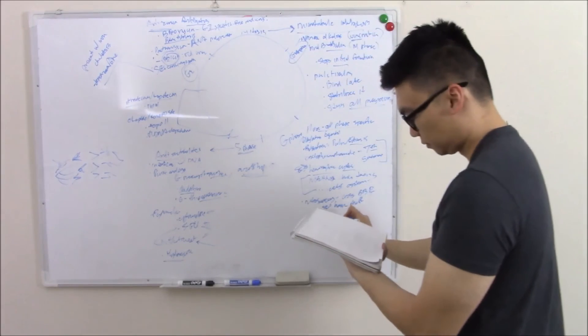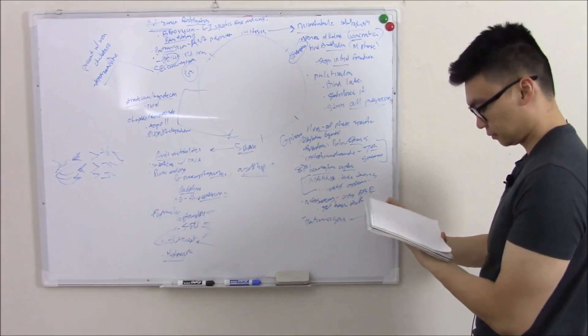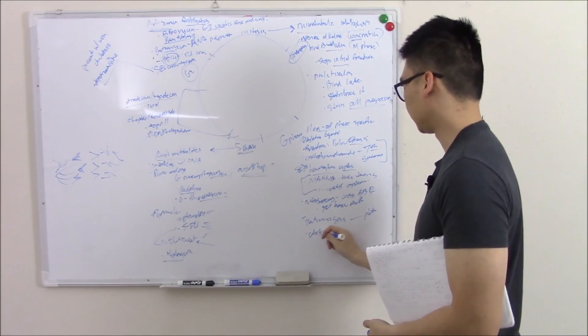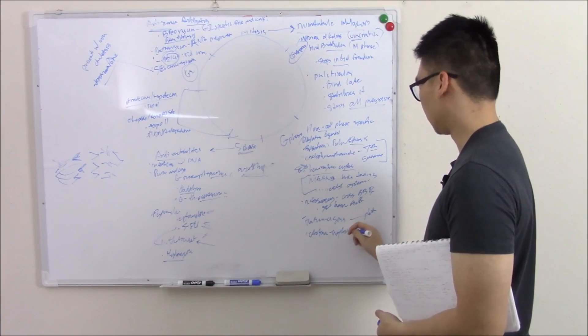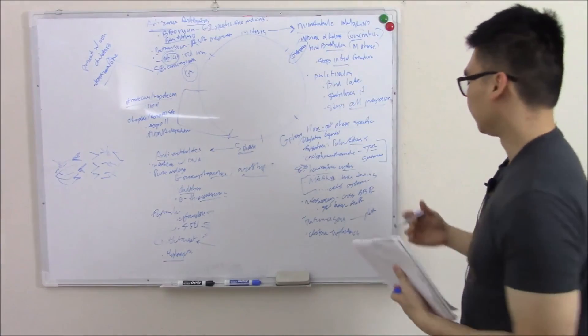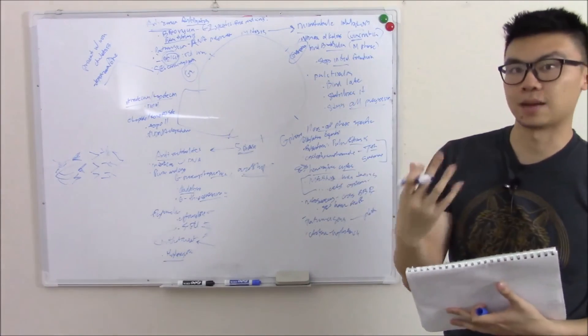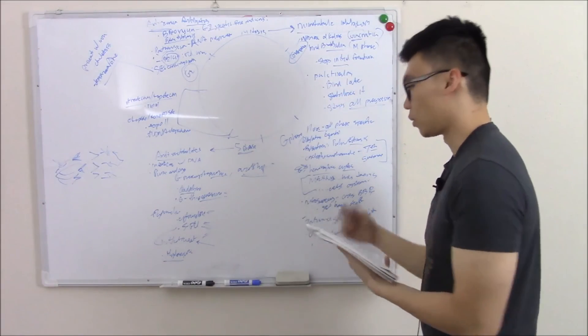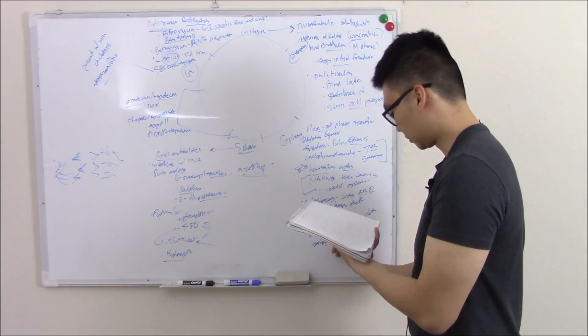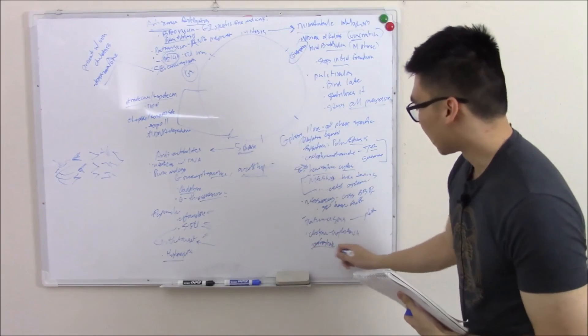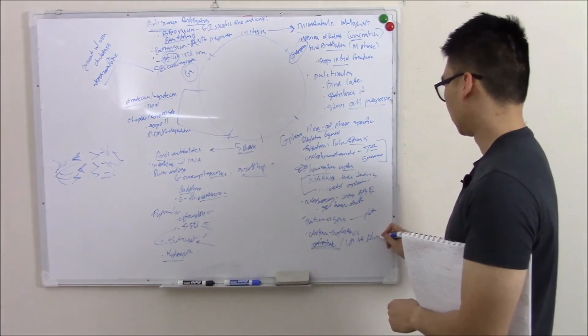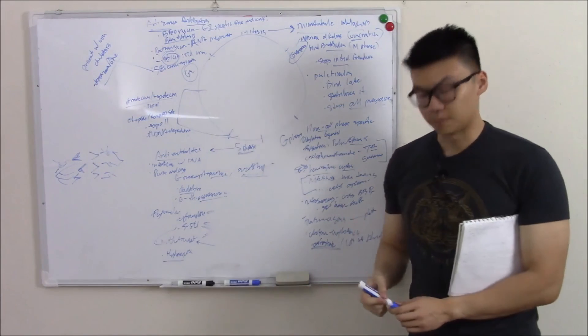And then last but not least, platinum agents. These all end in platinum. So very easy to recognize. Side effects, they're ototoxic and they're nephrotoxic. The metabolites cause a lot of free radicals and metabolites that can damage your kidneys. We don't want that, so we want something to bind these. That's kind of the running theme. And the thing that binds it is amifostine or just lots of fluids. Lots of fluids to flush out the bad stuff.